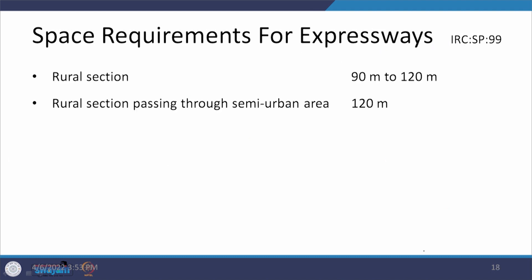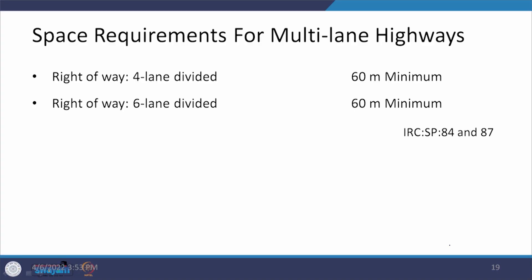Another case can be an expressway, which can be looked at in IRC SP 99. For the rural section it says you should have between 90 and 120 meters, but as soon as it is passing through a semi-urban area it says we should have 120 meters, because some space is going to be dedicated to traffic moving because of development in that area. For multilane highways — both 4-lane divided and 6-lane divided roads — the value has been defined as 60 meters minimum. You can look at SP 84 and SP 87 for further values.